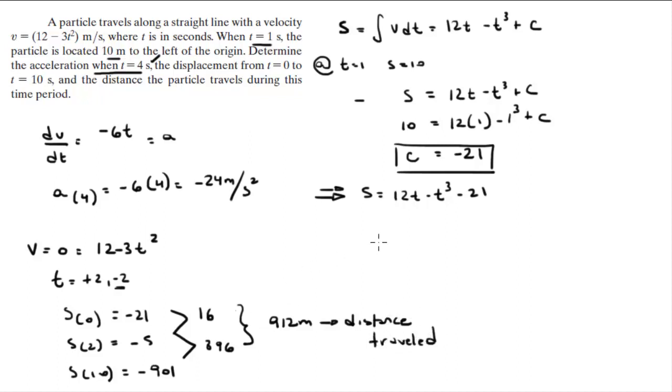And to find the displacement from 0 to 10, you basically need s at 0 and s at 10, which as we found before is negative 21 and negative 901. And the difference between the first and the last will give you the displacement, which comes out to be 880—I would say negative because it is going down—meters.